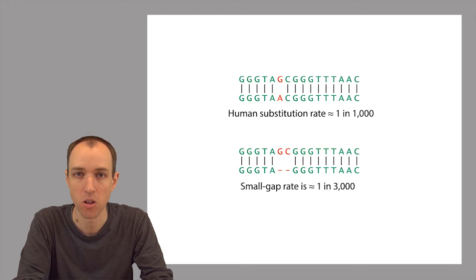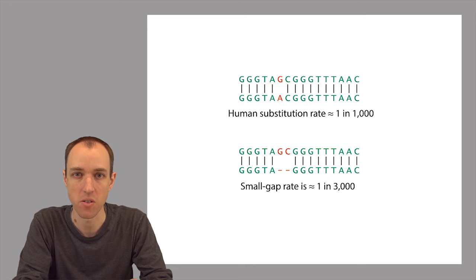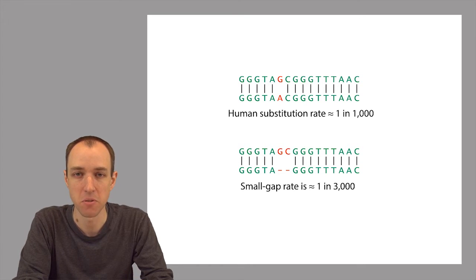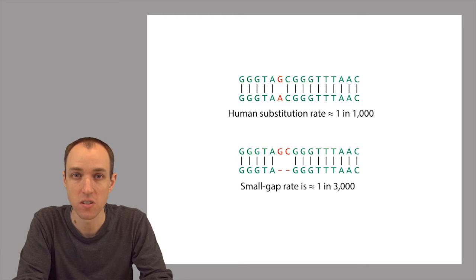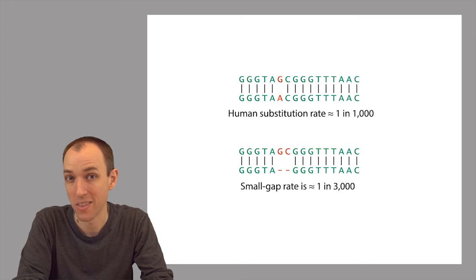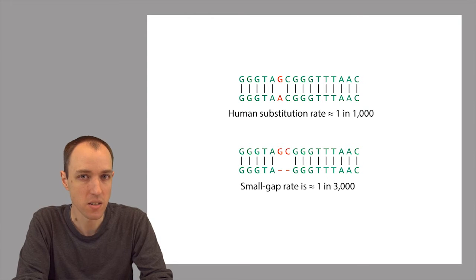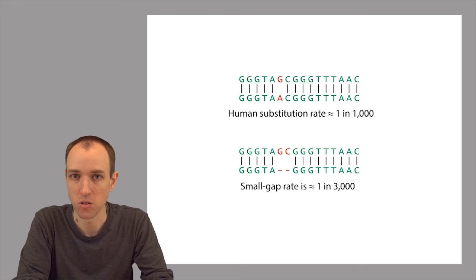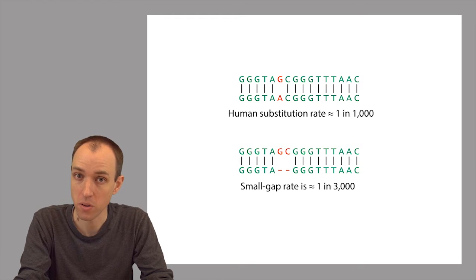Another example is small gaps, so small insertions and deletions in the genome. It turns out that if you take the genomes of two unrelated humans and you just count up how many differences there are that are substitutions versus how many differences there are that are small insertions or deletions, insertions or deletions of just a few bases, you find that the substitution rate is something like one in a thousand bases, whereas the indel rate, indel meaning insertions and deletions, the indel rate is something like one in three thousand bases or so. So indels are less frequent than substitutions, so we might want to penalize indels more than substitutions.